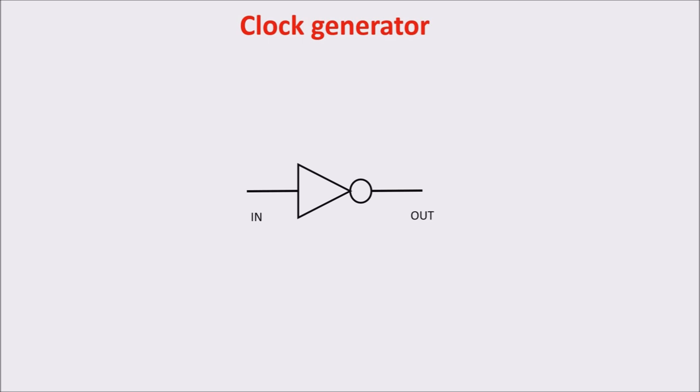We can consider an inverter in which a zero in input becomes a one on output. If we now connect the output with the input through a positive feedback, we get this circuit in which a zero in input becomes a one in output.